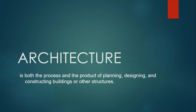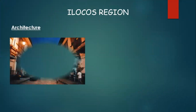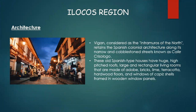Now let's proceed to another form of art, which is architecture. Architecture is both the process and the product of planning, designing, and constructing buildings or other structures. In Ilocos region, we can find the intramurals of the north in Vigan. It retains Spanish colonial architecture along its narrow cobblestone streets known as Calle Crisologo. These old Spanish-type houses have huge high-pitched roofs, large rectangular living rooms made of adobe, bricks, lime, terracotta, hardwood floors, and windows of capiz shells framed in wooden window panels.